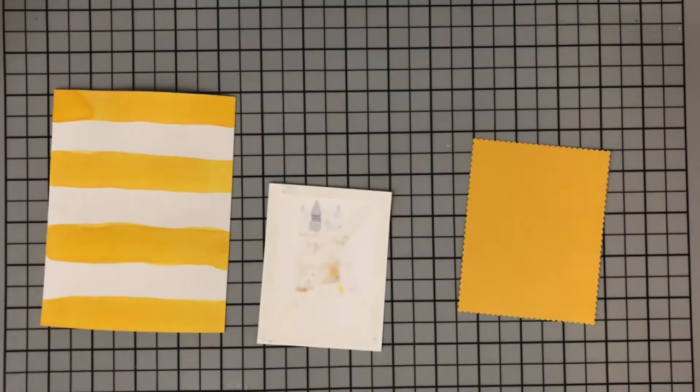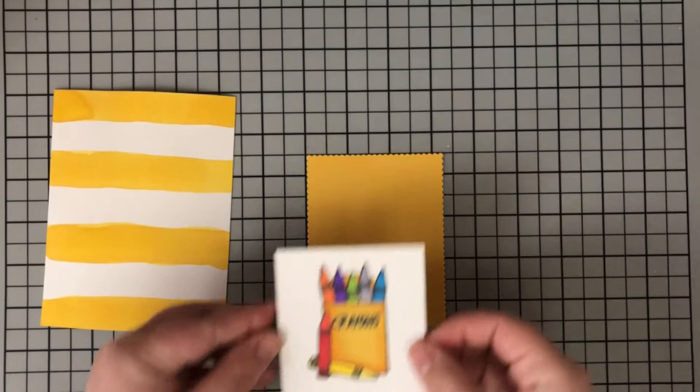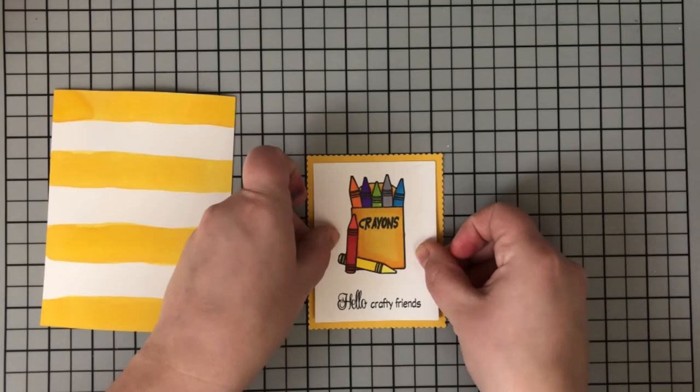Now while that's sitting off to the side drying, I'm going to go ahead and start adding up my layers here. So I'm taking my crayon panel that I've colored in and I'm adding it with that yellow scalloped rectangle that I cut for the mat. I use just plain regular double-sided adhesive.